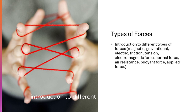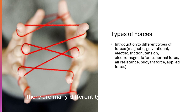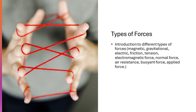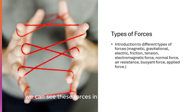Types of forces. There are many different types of forces in the world, like magnetism, gravity, and electricity. Magnetism is the force that attracts or repels objects. Gravity is the force that pulls things towards the earth. Electricity is the force that flows through wires and powers our devices. We can see these forces in action in everyday objects, like magnets sticking to the fridge or objects falling to the ground due to gravity.